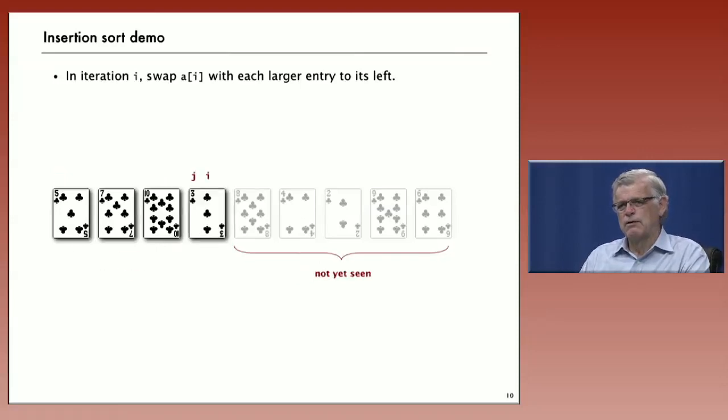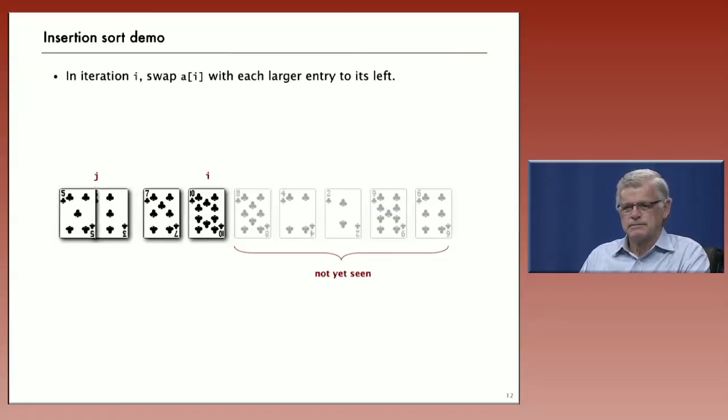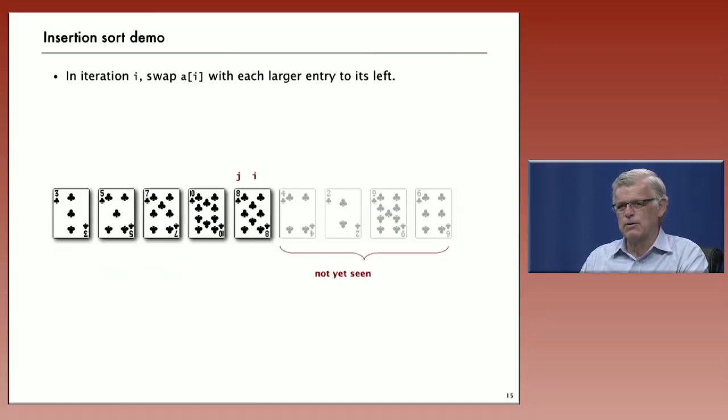So now we increment i again, and we come to the 3. Again, we exchange as long as the card immediately to the left is greater. And once we've done that, then we have everything to the left of i in ascending order. Now in this case we have the 8. We only have to exchange 1, and now it's got the 7 to its left, and everything is in order. So we've achieved putting it in order with less work in this case. We don't always have to go all the way back to the beginning.